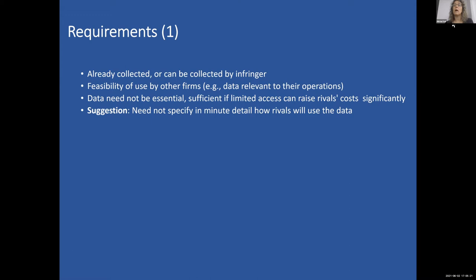I would like to suggest six different requirements that need to exist for an antitrust defense to arise. The first is that the data is important for competition in the market — it might be data already collected or that can be collected by the infringer. What is important is the feasibility of the use of this data by other firms. I suggest data need not be essential, but it's sufficient if limited access to it can raise rivals' costs significantly. There's also no need to specify in minute detail how rivals will use the data.